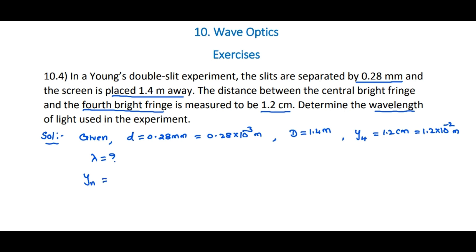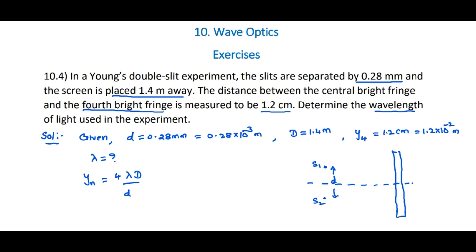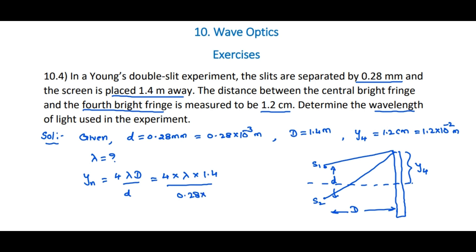The formula is: y_n = n × λD/d. Here, small d is the separation between the two sources S1 and S2, and capital D is the distance to the screen. So y₄ = 4 × λ × 1.4 divided by 0.28 × 10⁻³.